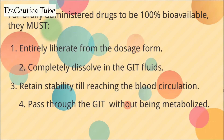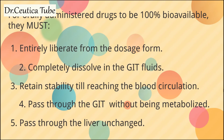Fourth, the drug should not be liable to metabolism prior to reaching the general circulation. It should pass through the GIT without being metabolized, and if it gets to the liver through the portal circulation before reaching the general circulation, it should get out unchanged — that is condition five. If any of these conditions are not met, then less than 100% of the drug will get into the blood. Until today, this remains the case with oral dosage forms.